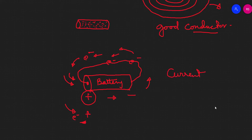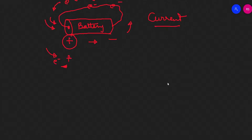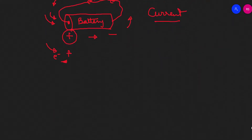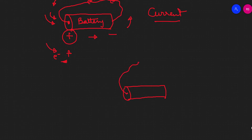The current is the flow of electrons — the electron flow is the current. If the battery is connected to the circuit and the circuit is open, then the electron flow will be interrupted. The circuit is open, meaning no current flows.